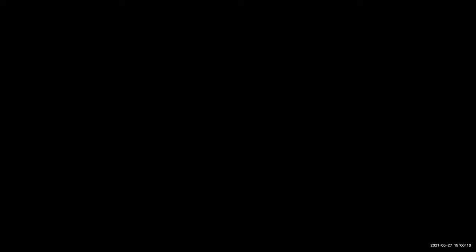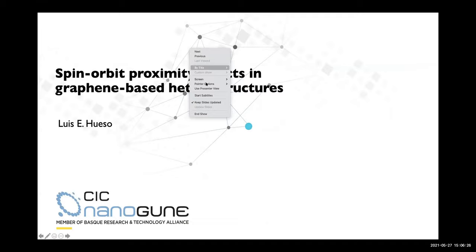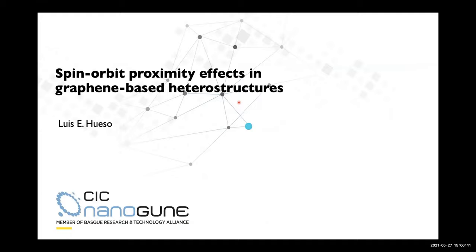So let me go through the presentation. The title is: Spintronic Proximity Effects in Graphene-Based Heterostructures. Before I start, I would like to introduce the place where we are, which is San Sebastian. This is the Bay of San Sebastian that many of you may know. Very close to the beach is our research center, CIC Nanogun, which is fairly new — slightly more than a decade in operation. We are in the University of the Basque Country campus, although we don't belong to the university itself.